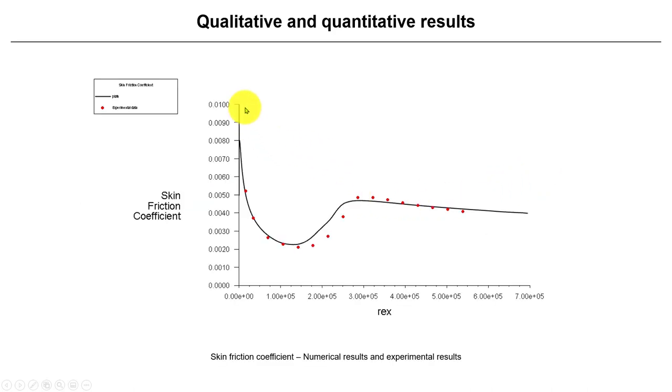We also have the validation data for the skin friction at the flat plate. Here we have our experimental values and numerical values. See here, clearly we can see the transition. At the beginning, we have laminar following this laminar behavior, and then we have the transition doing the switching and then becoming fully turbulent.